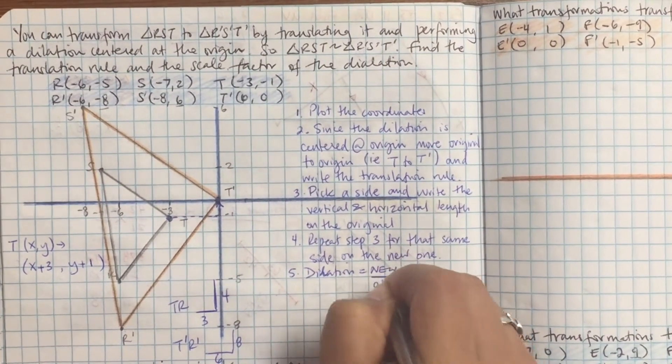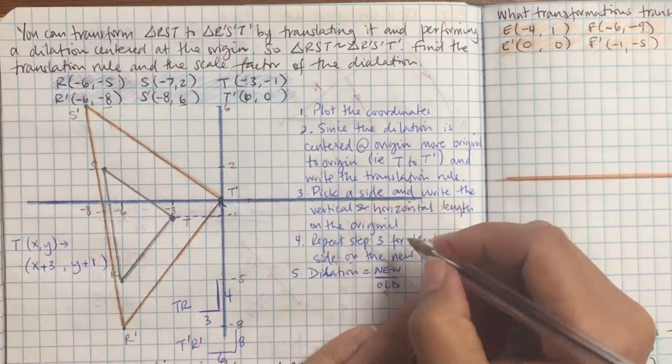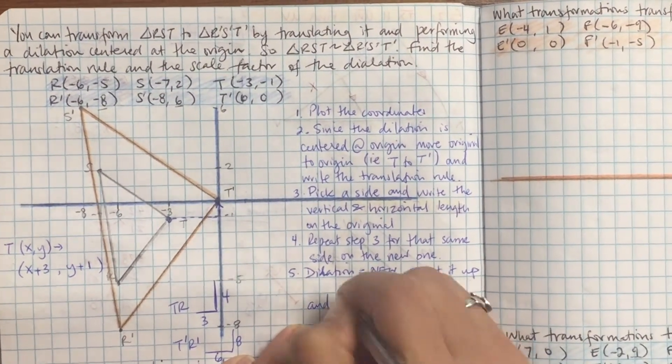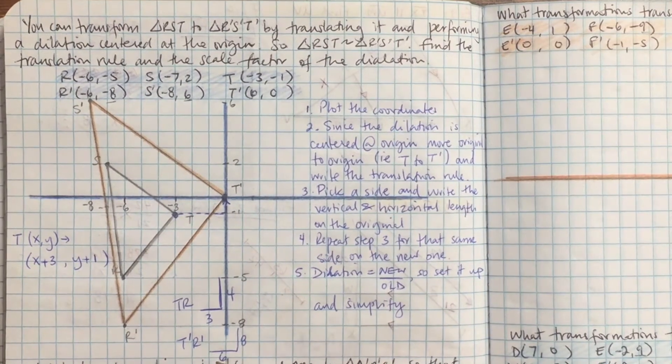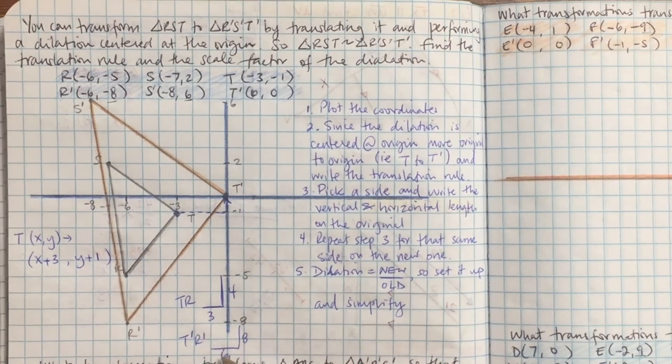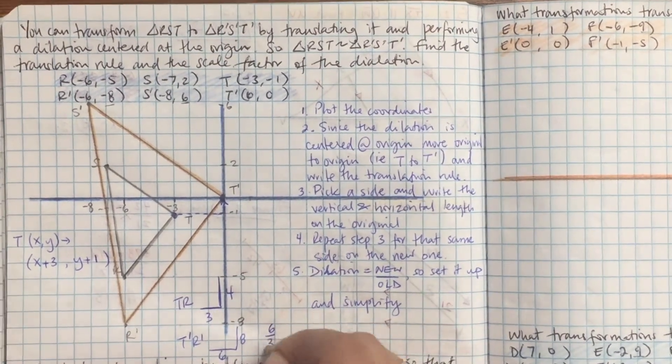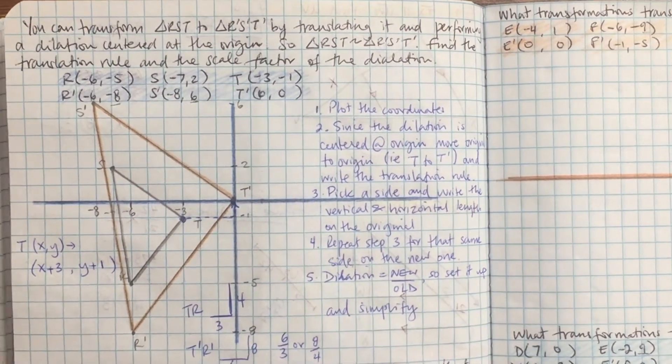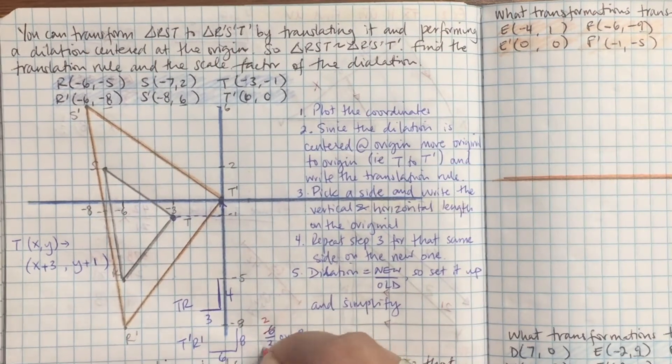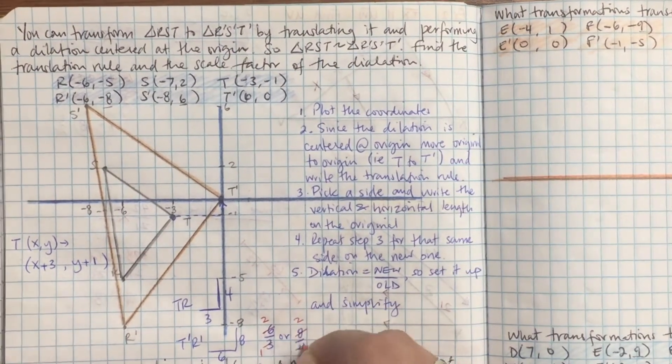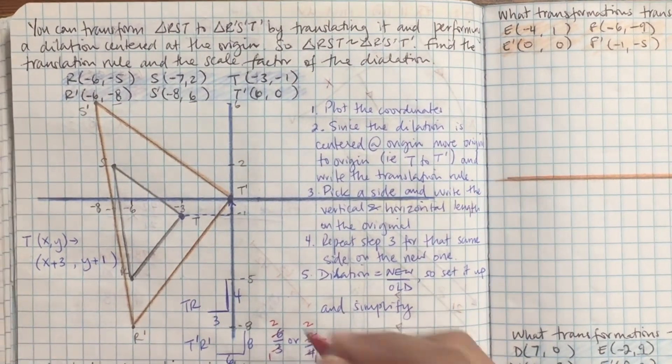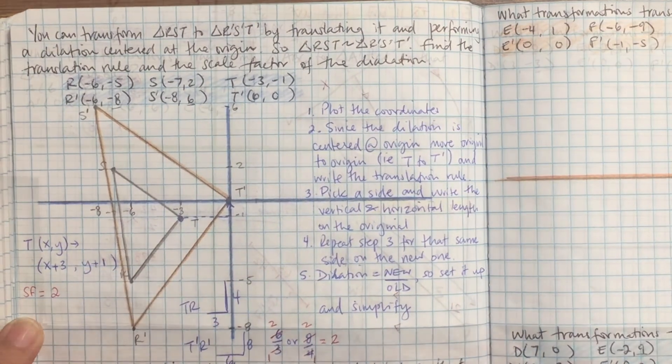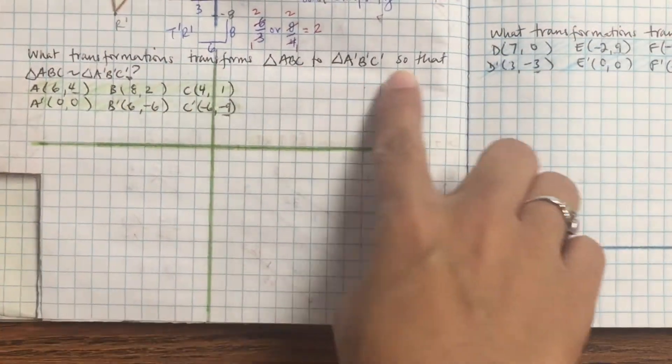Step 5, dilation, if you remember to find the scale factor it's new over old, so set it up and simplify. New over old. So the prime is your new, your old is your original. So 6 over 3 or you could pick the other side which is 8 over 4. Let's go ahead and simplify that out. So if simplified by 2 you're going to get 2 over 1. Simplified by 4 you're going to get 2 over 1 which is equal to 2. So your scale factor is 2.